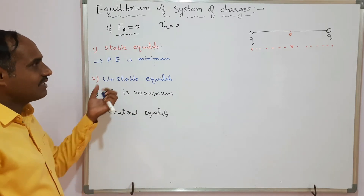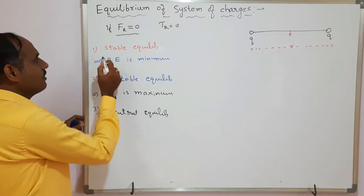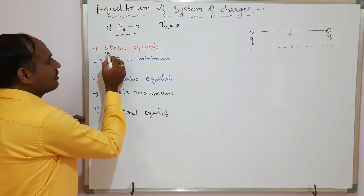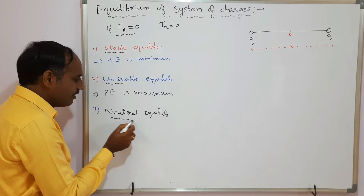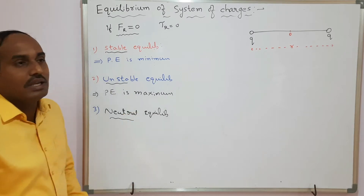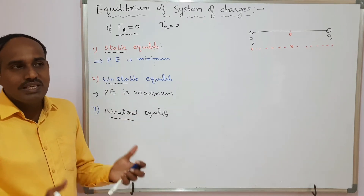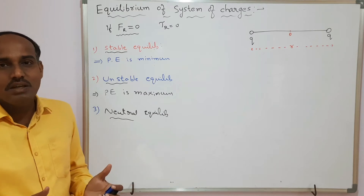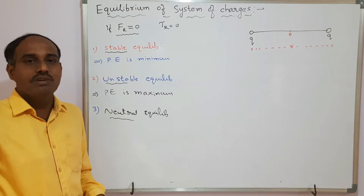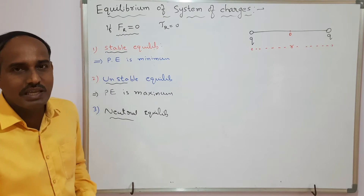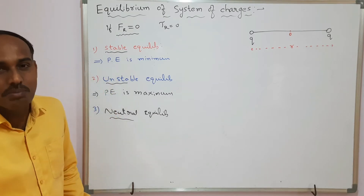When classifying the equilibrium of any body, there are three types: stable equilibrium, unstable equilibrium, and neutral equilibrium. In stable equilibrium, there is a tendency of attaining the initial or original position once again after being disturbed, and such equilibriums are said to be stable equilibrium.